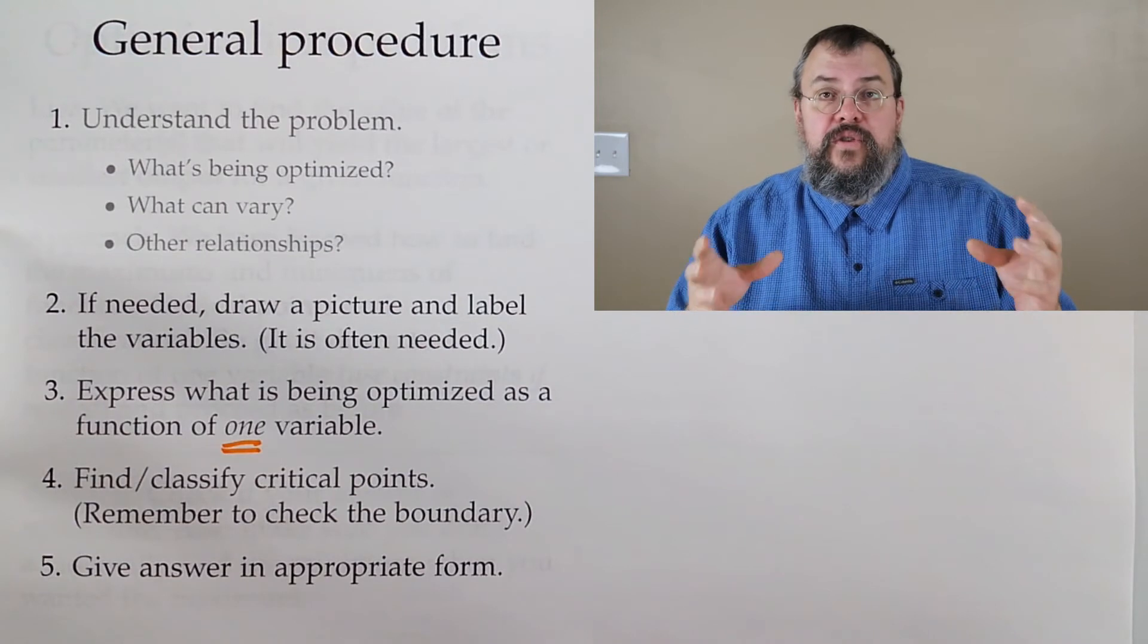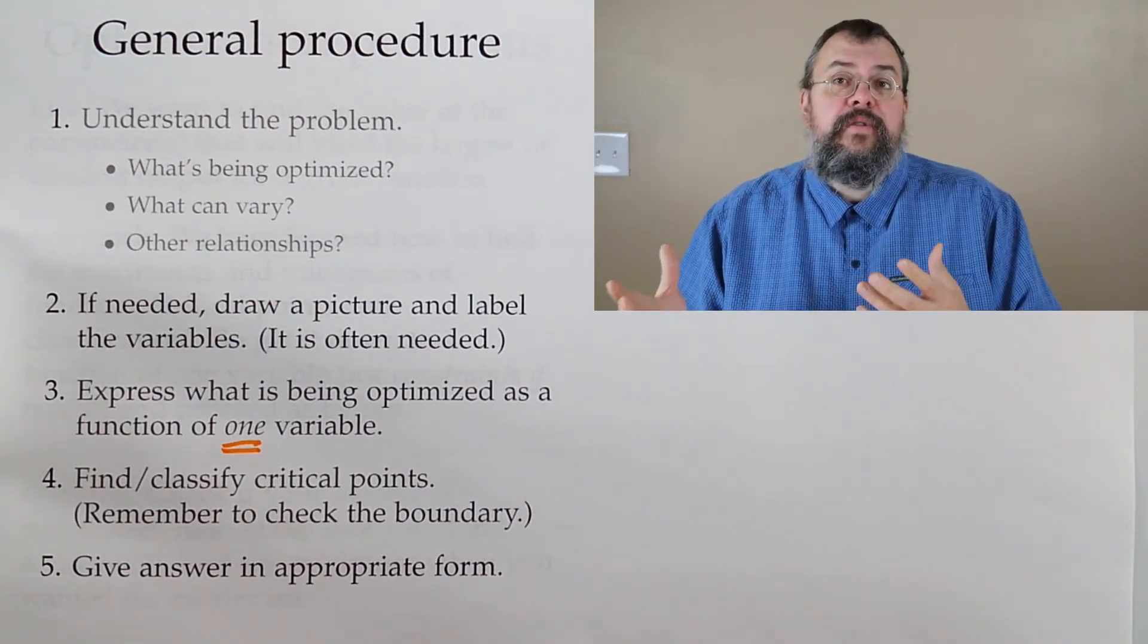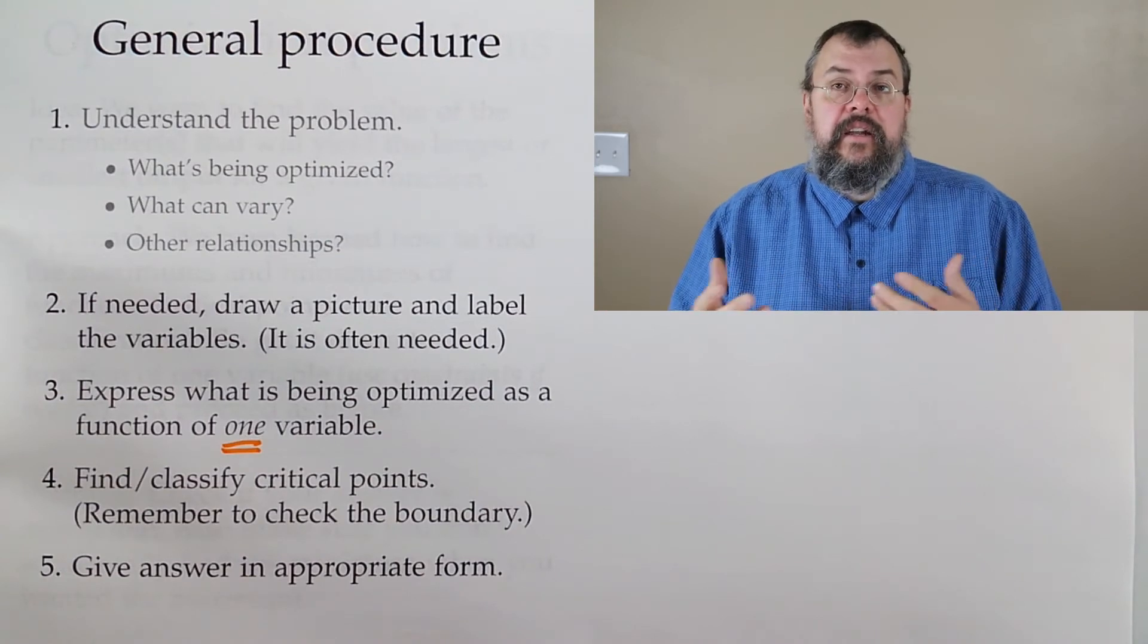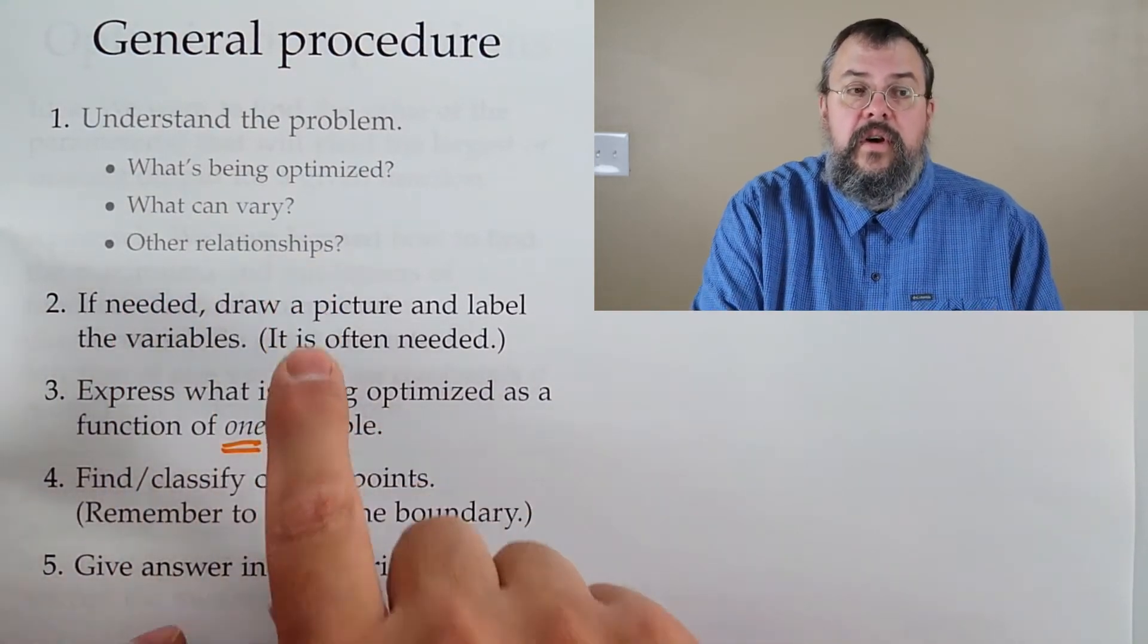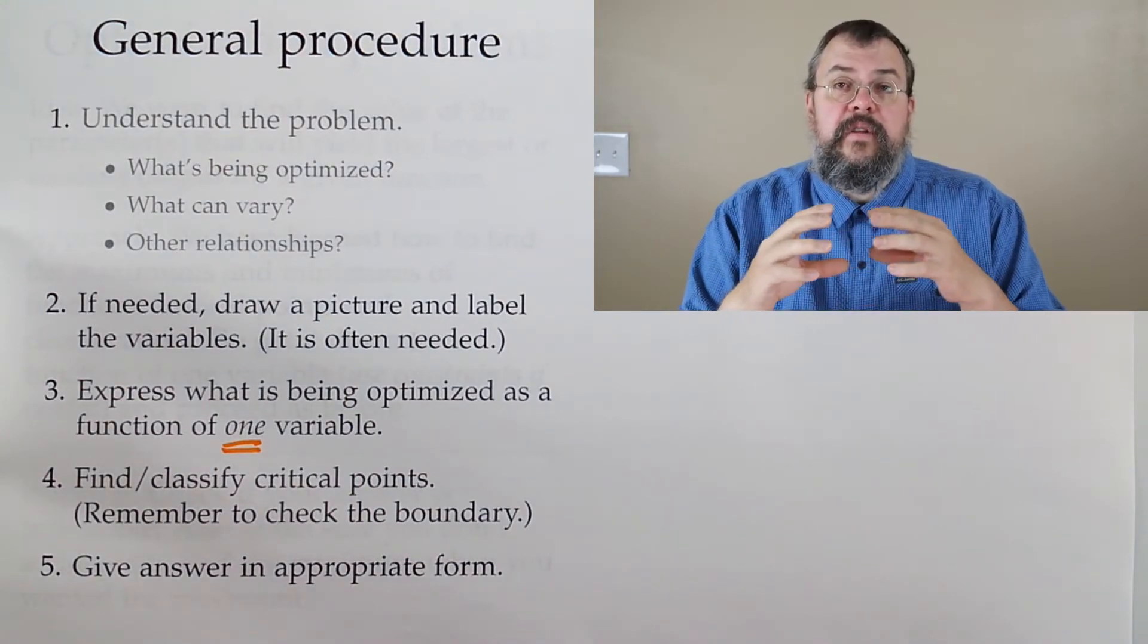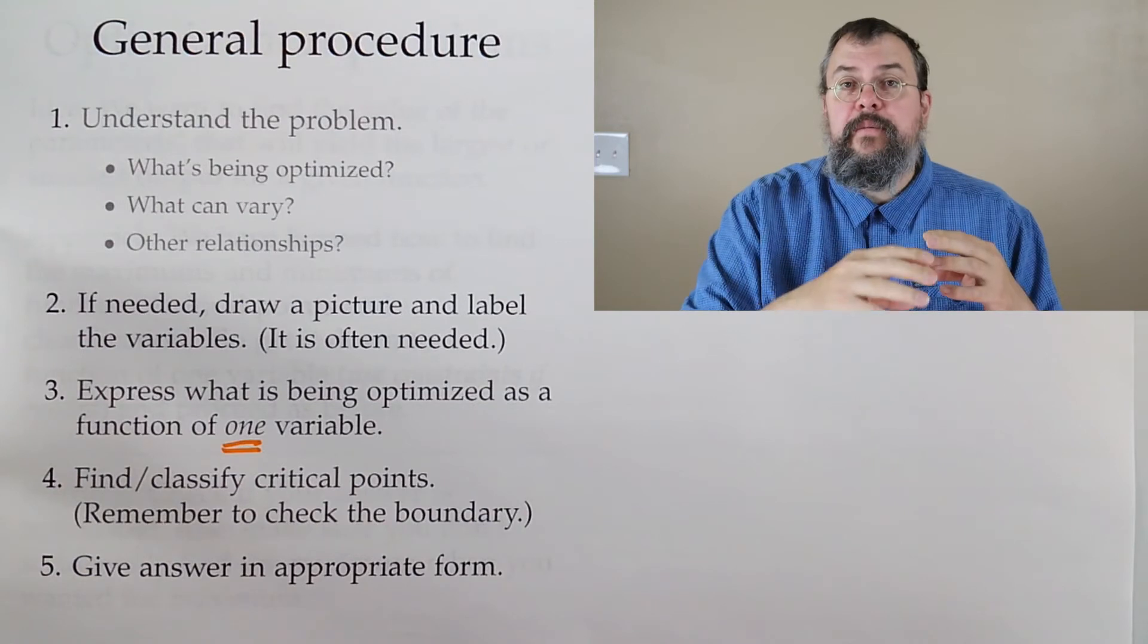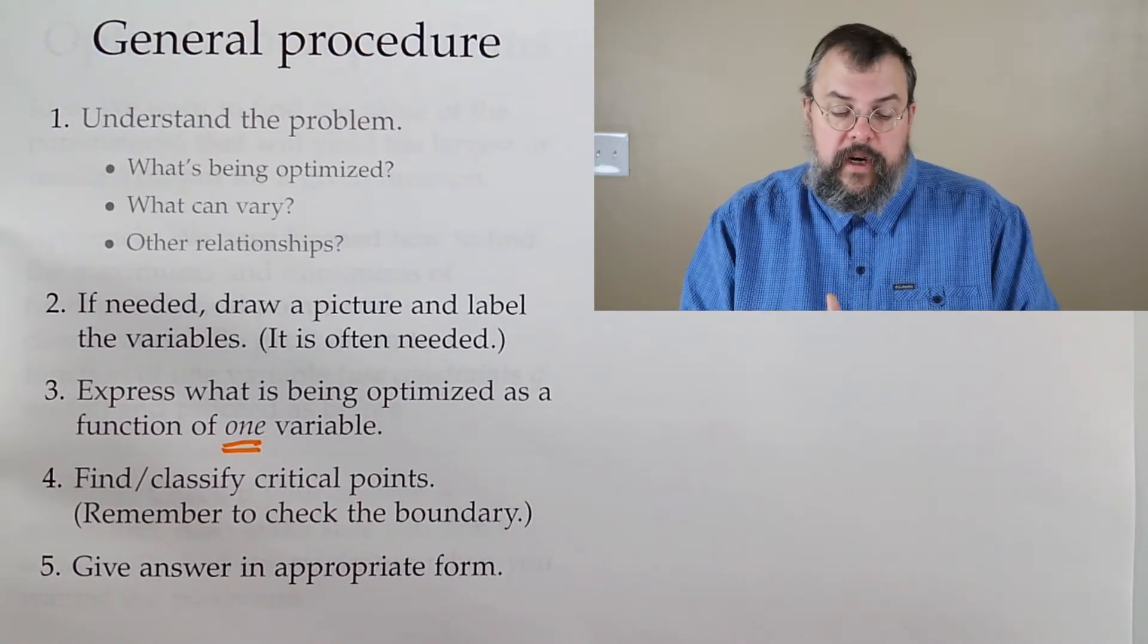If there's two or more things changing, there must be some other relationship in play that connects them together. That's why we said to look for those other relationships. With those relationships, we can solve for one variable in terms of the other and do a substitution to reduce the number of variables involved. That's how we get down to functions of one variable.